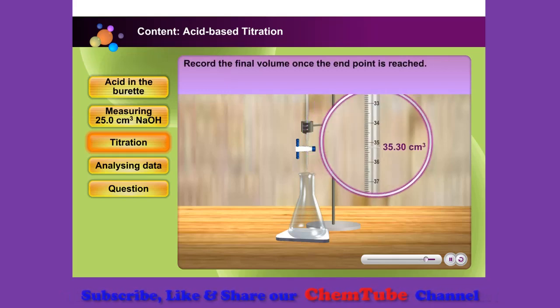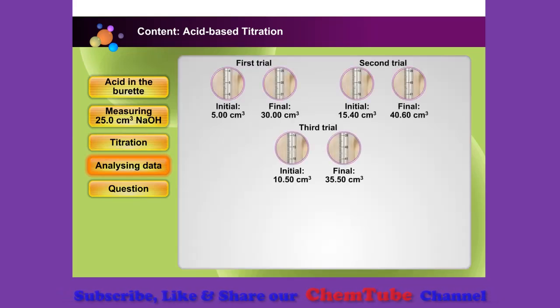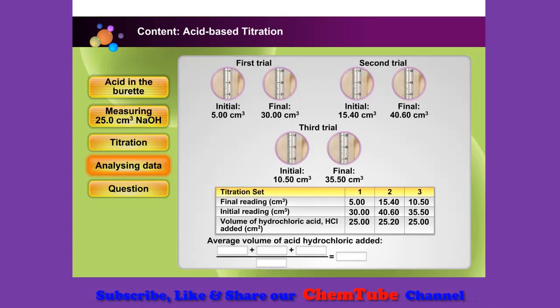Record the final volume reading of the burette in your notebook and calculate the total volume of titrating solution that has been added. Record the initial and the final burette readings. Now, calculate the average volume of hydrochloric acid added.